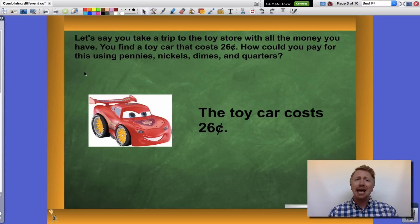Now let's say we take a trip to the toy store with all the money we have. We find a toy car that we really really like that's worth 26 cents. How could we pay for this using a combination of pennies, nickels, dimes, and quarters?